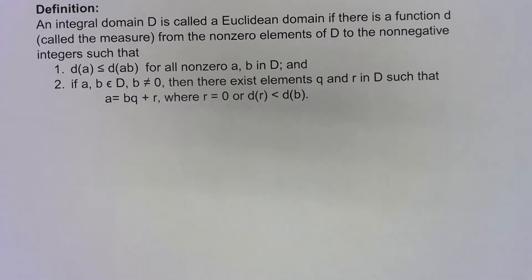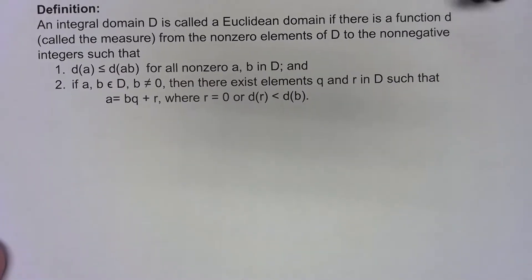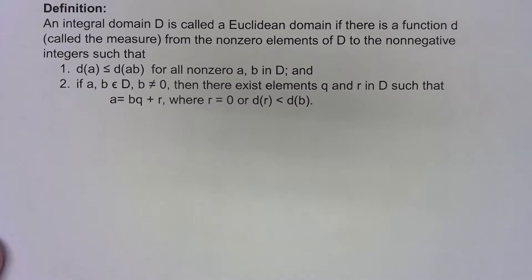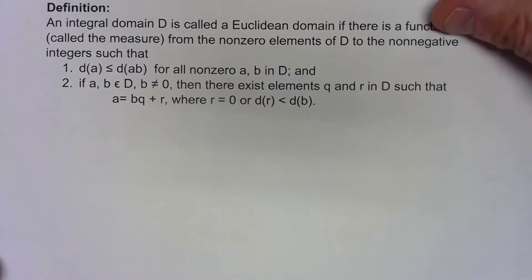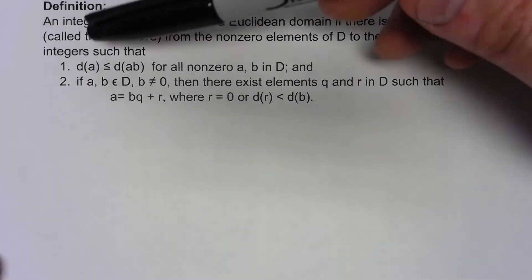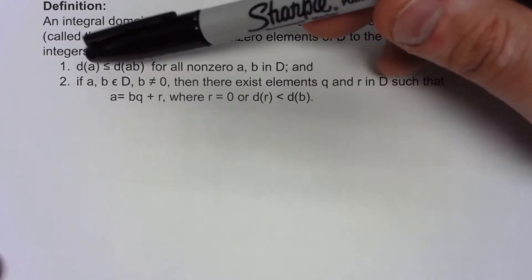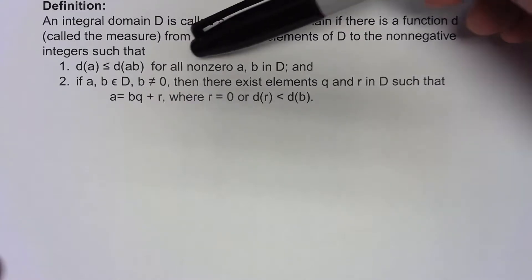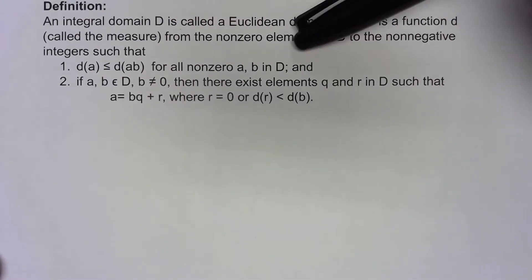Now another thing here is what we call an integral in a Euclidean domain. We got a function d called the measure and the reason they use d is for distance is what they're kind of implying. We've got a function that goes from the non-zero elements of D to the non-negative integers such that d(a) is less than or equal to d(ab) for all non-zero a and b in the domain.